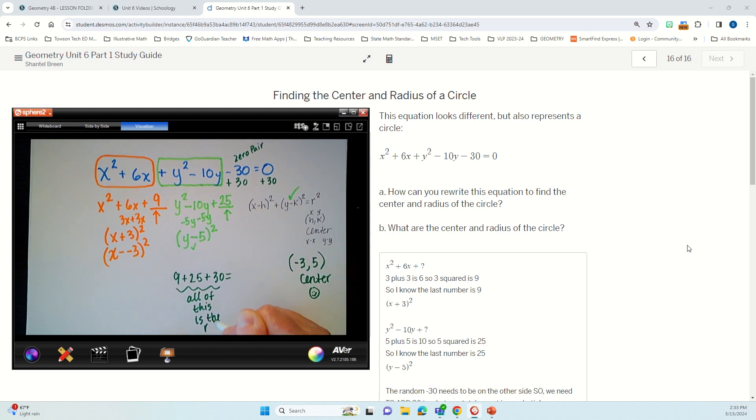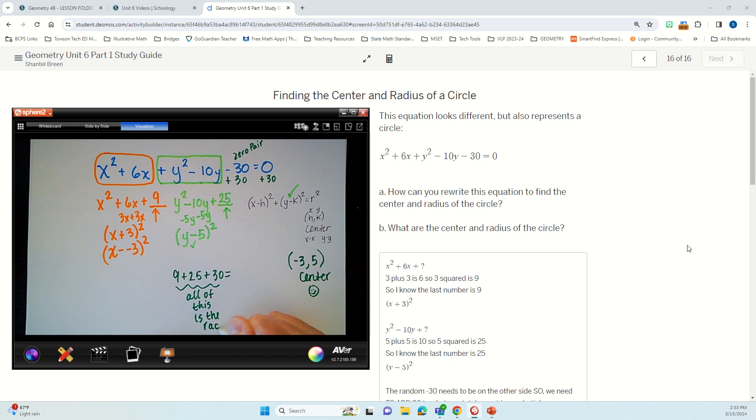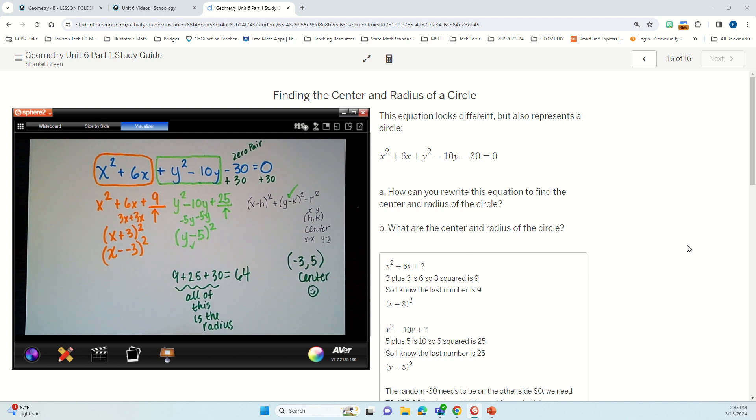Just remember that it's radius squared, right? The formula is r squared. Okay, so if I add all these up, I get 64. Radius is not 64. It's the square root of 64. So now I have my equation. My radius is 8, which is the square root of 64.